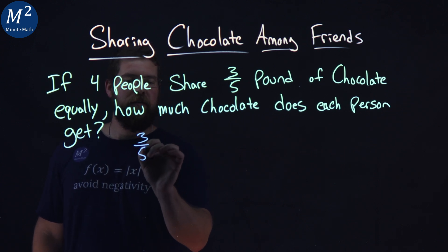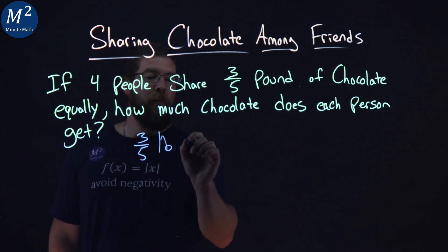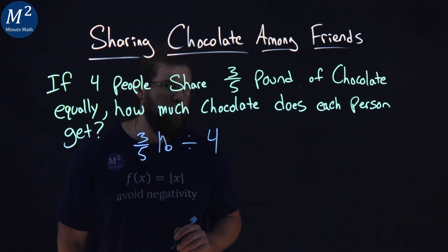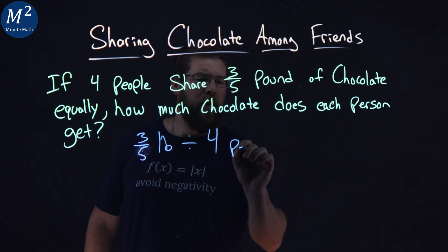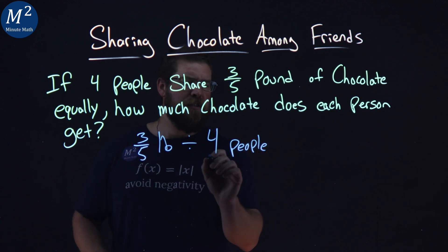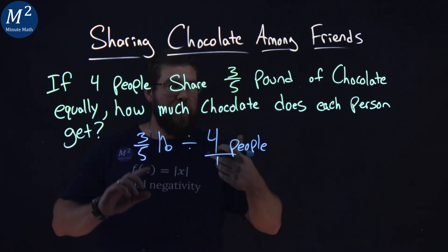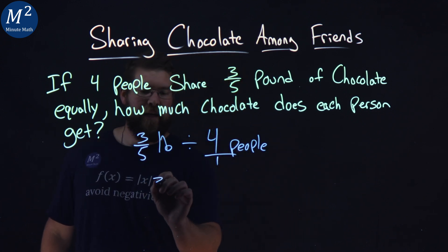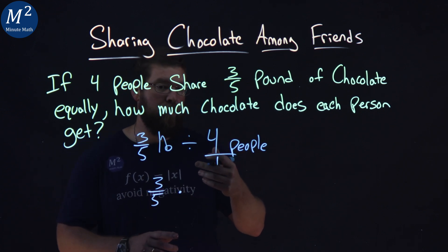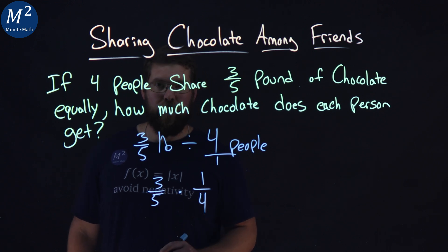We have three-fifths of a pound of chocolate, and we want to divide that by four people — dividing it by four. Four people is the same as a fraction: four over one. So we can rewrite this as three-fifths multiplied by the reciprocal of four over one, which is one-fourth.